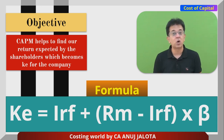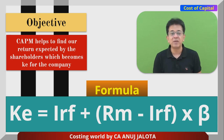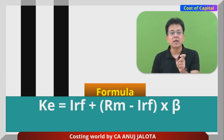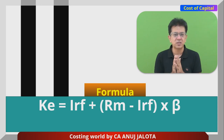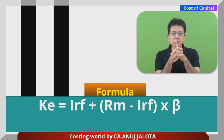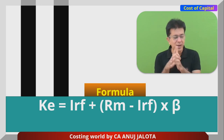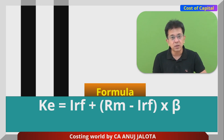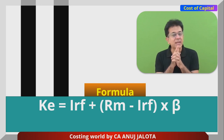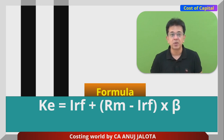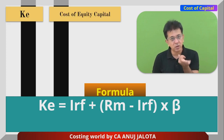Before William Sharp, Gordon was very famous — his formula was Ke = D1/P0 + g. William Sharp gave a formula for Ke in reference to stock markets. Think of yourself as an investor buying TCS shares — you expect some return. At minimum, you'd want at least the return you can get anywhere without taking risk, which is Irf — the interest on risk-free securities.